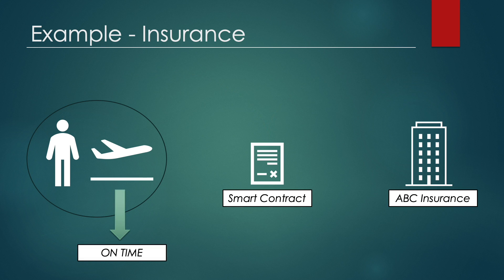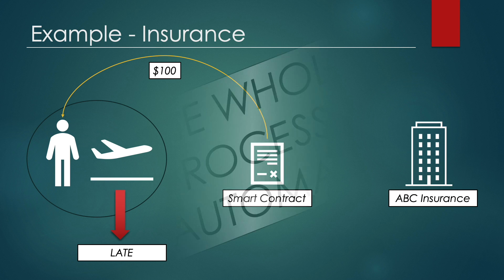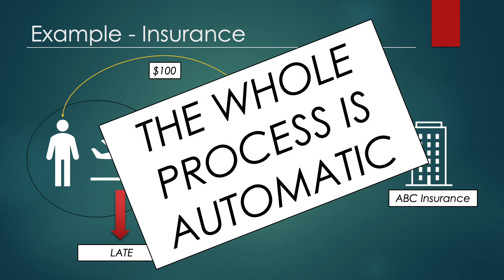If the flight is on time, then ABC insurance is sent the hundred dollars from the smart contract. However, if the plane is late, the hundred dollars is sent to Adam from the smart contract, and everything about this transaction is completely automatic. This saves lots of time and money. It also means that Adam does not have to trust that ABC insurance will pay him the agreed amount if the flight is late. He knows that if it is late, the smart contract will instantly send him his compensation of one hundred dollars.